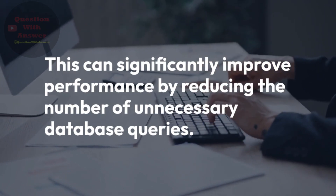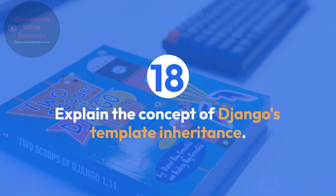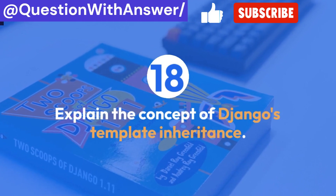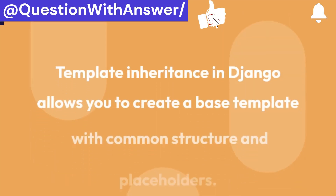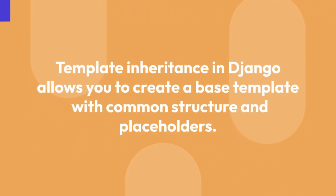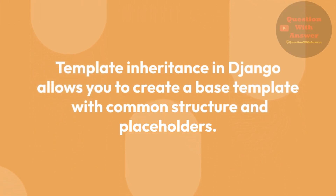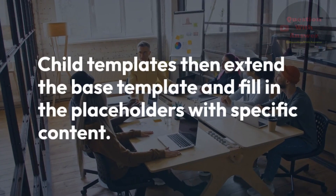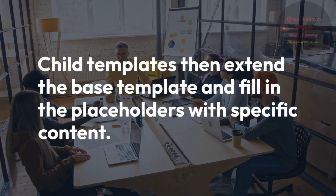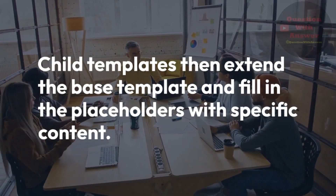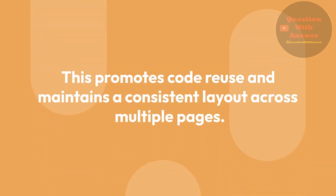Question 18: Explain the concept of Django's template inheritance. Answer: Template inheritance in Django allows you to create a base template with common structure and placeholders. Child templates then extend the base template and fill in the placeholders with specific content. This promotes code reuse and maintains a consistent layout across multiple pages.